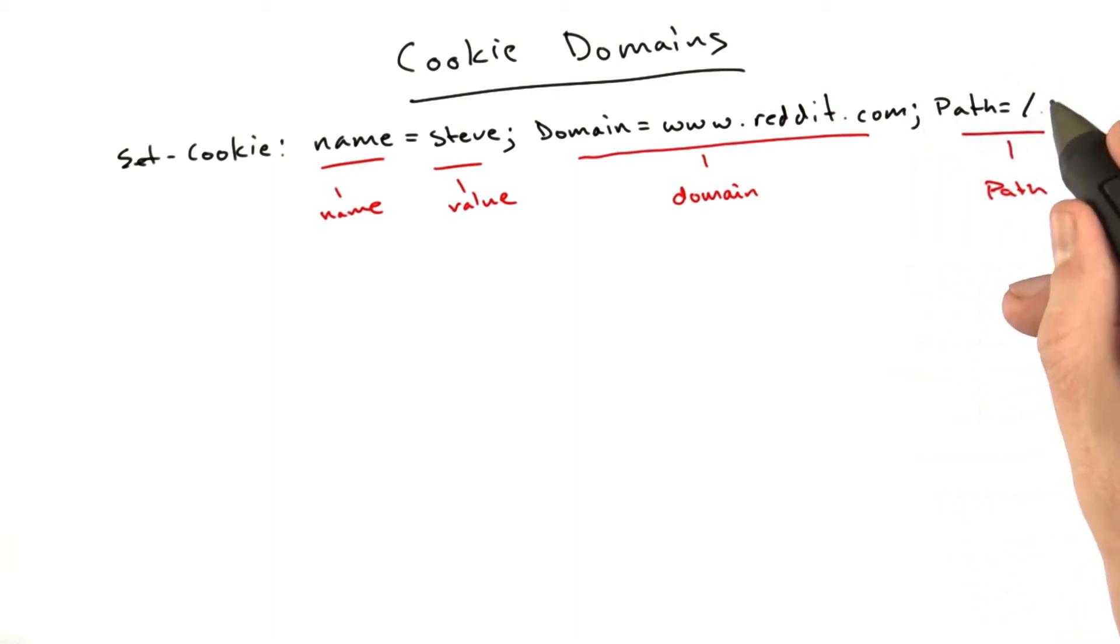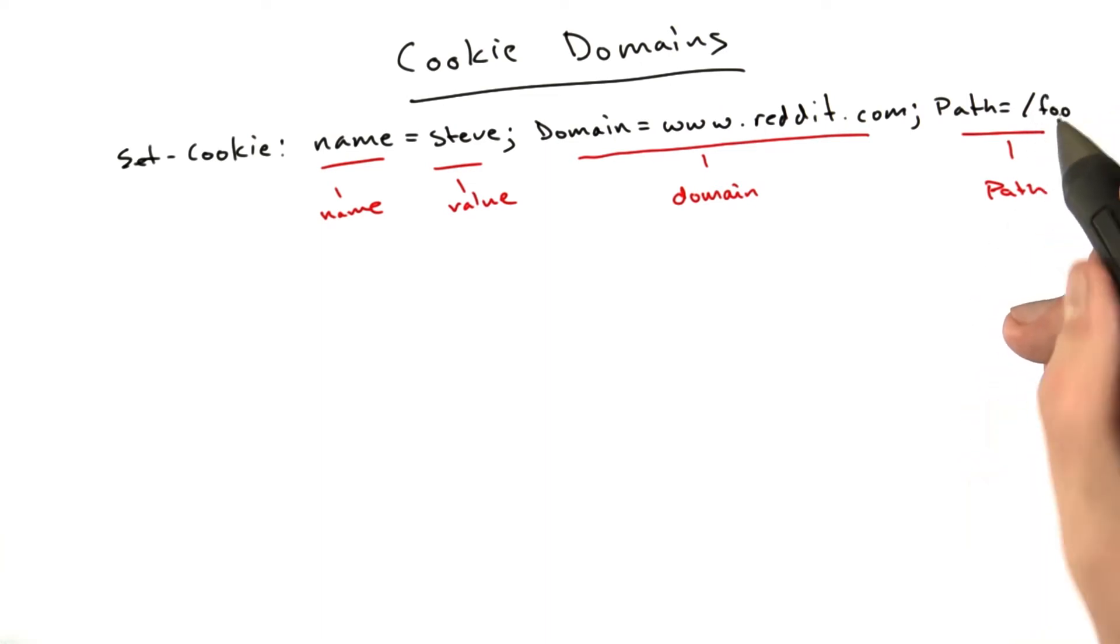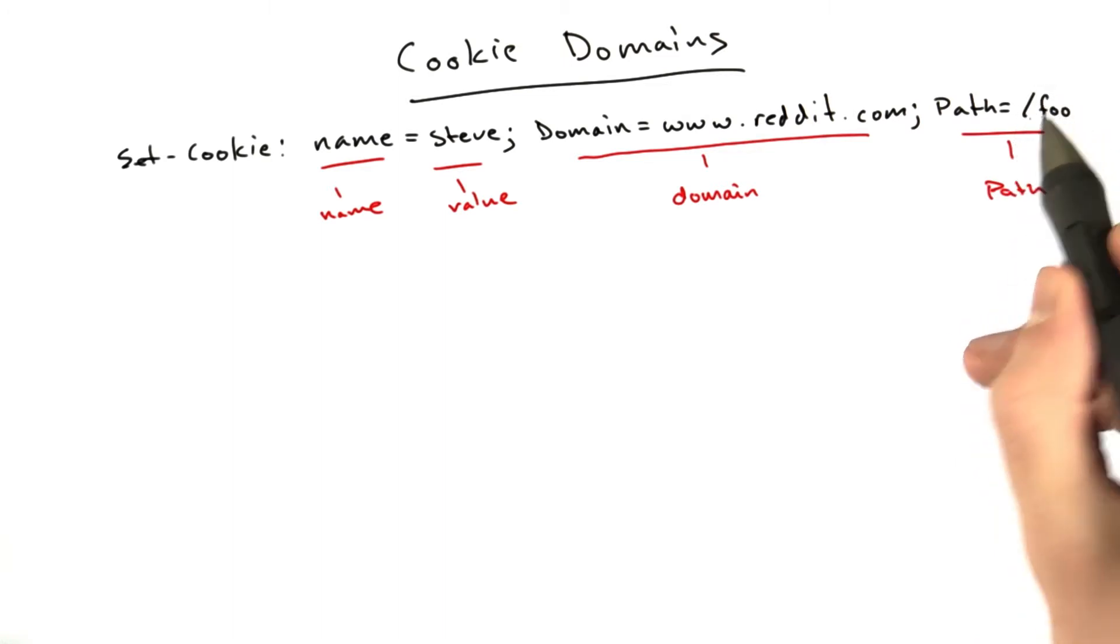The cookie applies to all of the paths, but if you want to restrict a cookie to a particular path, you can specify that path here, and the browser will make sure that the path you're requesting starts with this value before it sends the cookie.